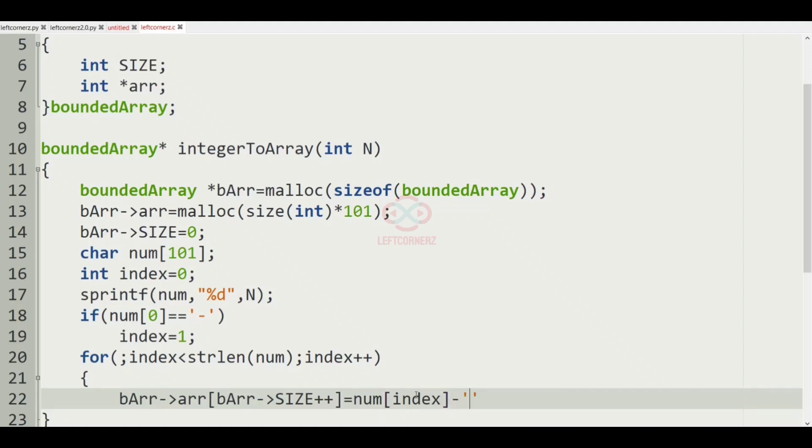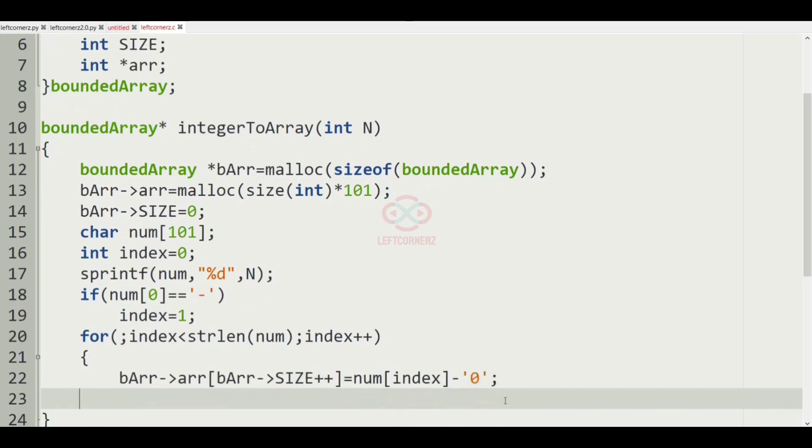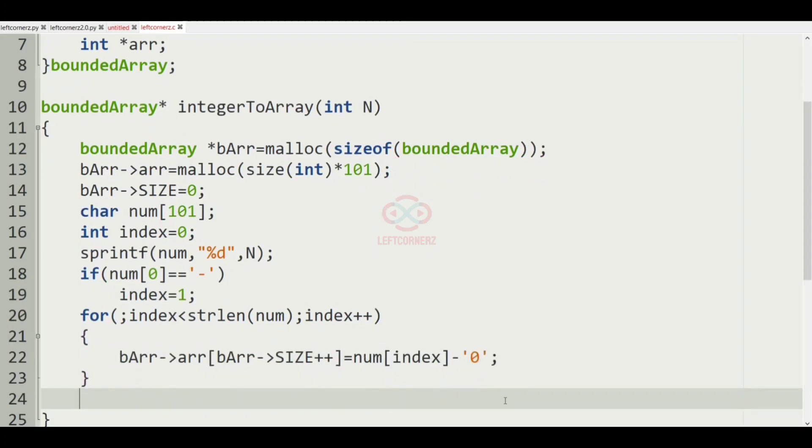Index minus 0, so this will give us the correct output. And at last we'll return the bArr.